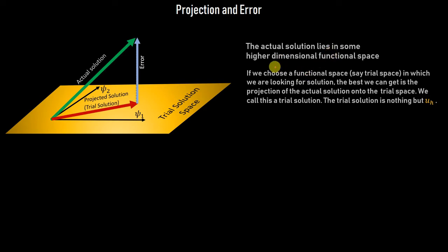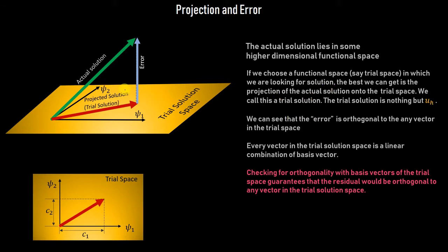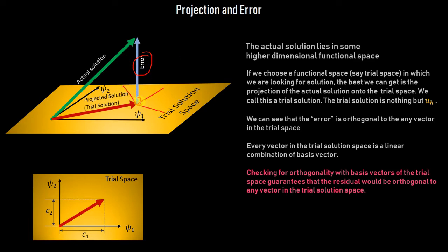There is no direct geometric picture in this functional space, but we use our intuition from geometric vectors. We can see that this error is orthogonal to the complete trial solution space — it is normal to every vector in the trial solution space, no matter which vector you draw. This orthogonality condition ensures we have the minimum error.